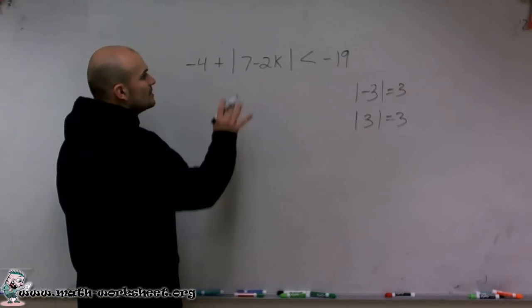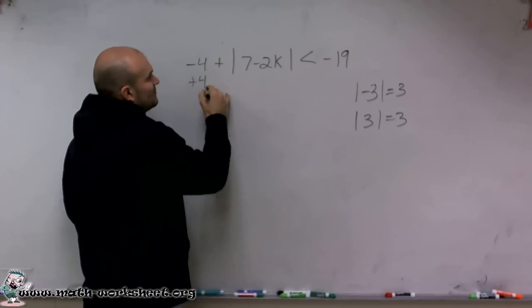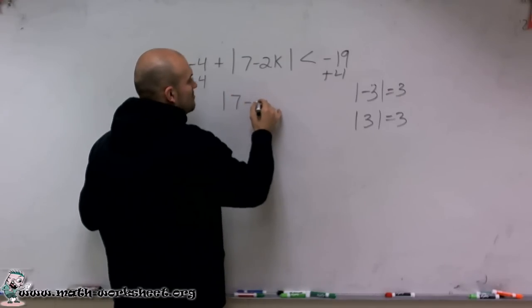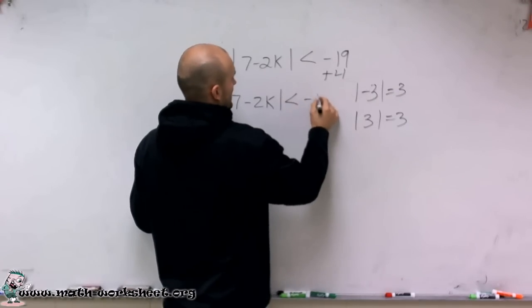And I'll get to that in just a second. The first thing we need to do is isolate the absolute value. So I add 4 to both sides. And therefore, I'm left with absolute value of 7 minus 2k is less than negative 15.